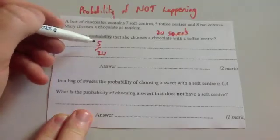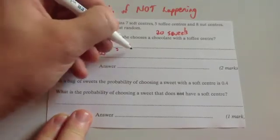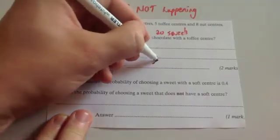So it's 5 twentieths. They're both in the 5 times tables. So divide the top by 5, and you get 1. Divide the bottom by 5, and you get 4. So that should be 1 quarter.